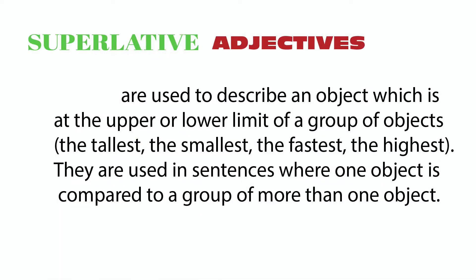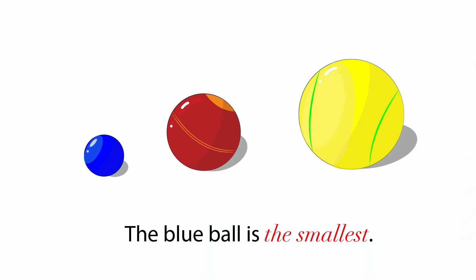Superlative adjectives are used to describe an object which is at the upper or lower limit of a group of objects. They are used in sentences where one object is compared to a group of more than one object. For example: the blue ball is the smallest.